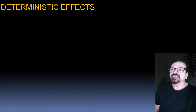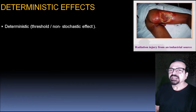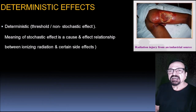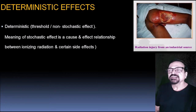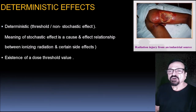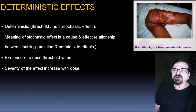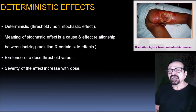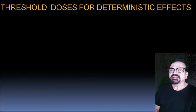Deterministic effects are also called threshold or non-stochastic effects. They involve a cause-and-effect relationship between ionizing radiation and side effects, with a dose threshold value above which severity increases with dose. A large number of cells are involved. The threshold doses for deterministic effects include: cataracts of the lens at 2–10 Gray; permanent sterility in males at 3.5–6 Gray and in females at 2.5–6 Gray.